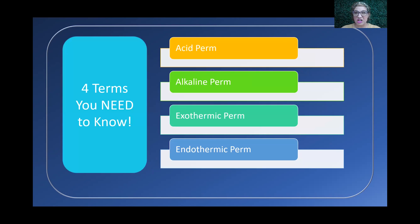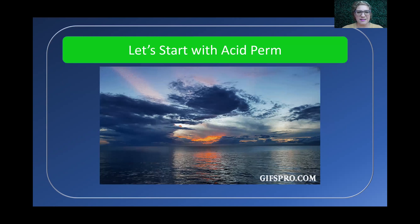Four terms that you need to know, you absolutely need to know to pass the state board and to succeed as a stylist in this industry: acid perm, alkaline perm, exothermic perm, and endothermic perm. We're going to do a really quick rundown. I'm going to try to include some audio here. We're going to be a little bit different today and see how this goes.